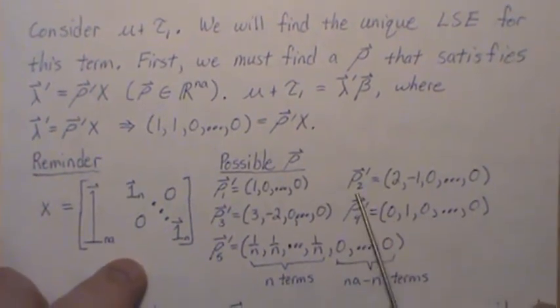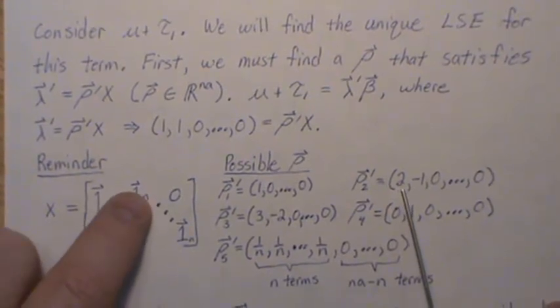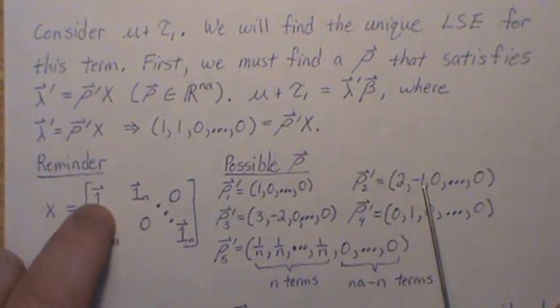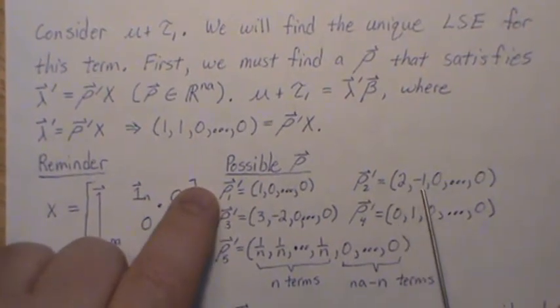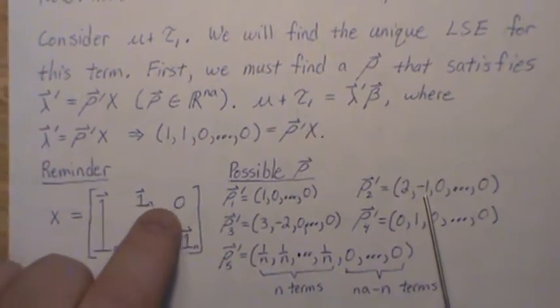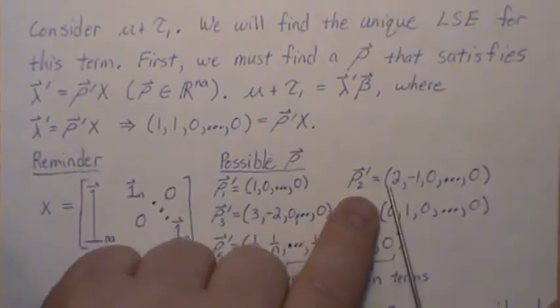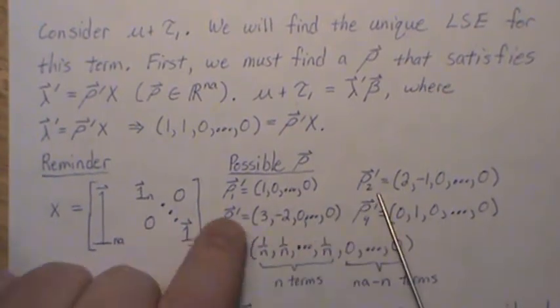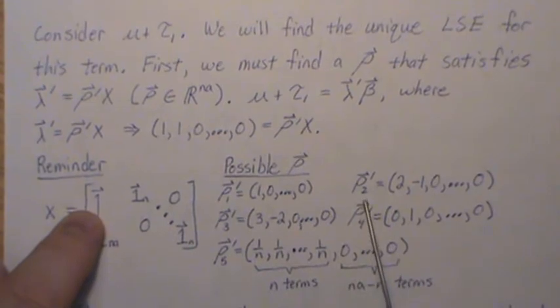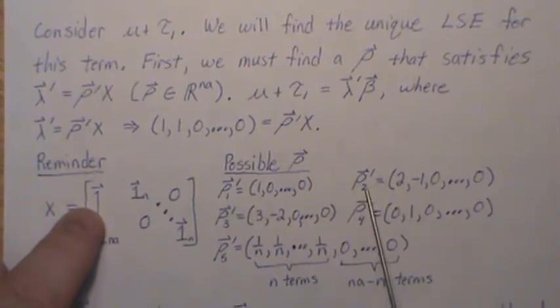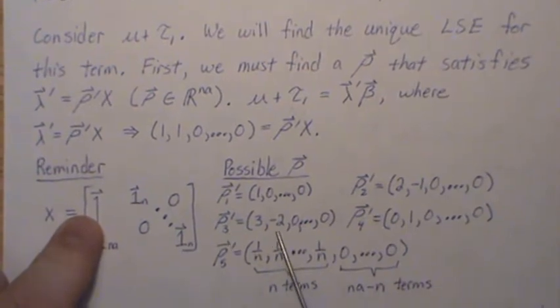But it could also be row 2. This says take 2 times row 1, subtract row 2. So we get 2, 2, rest 0s, and then minus 1, minus 1, the rest 0s. When we add those, we get 1, 1, and the rest 0s, exactly what we need. So this row 2 would also satisfy this requirement.